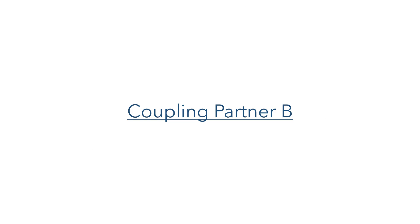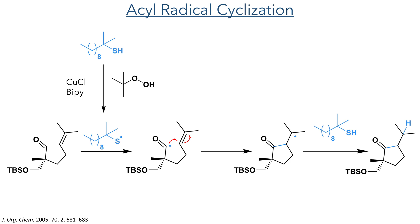So let's proceed to look at the synthesis of coupling partner B. This starts with an acyl radical cyclisation. Tert-dodecanethiol is reacted with tert-butyl hydroperoxide, copper chloride and bipyridine to generate a thiol radical. This transfers the radical to the carbonyl centre, which undergoes a 5-exo-trig cyclisation to form the cyclopentanone.